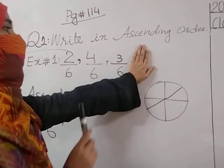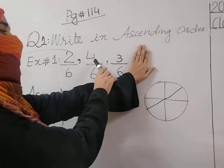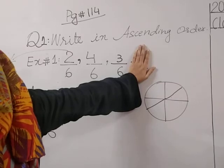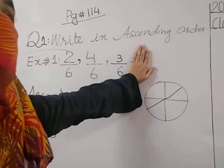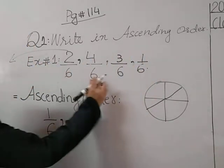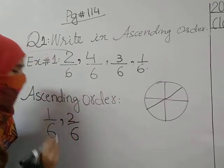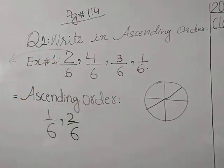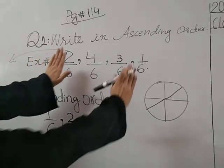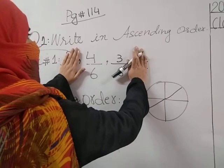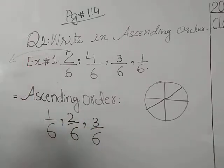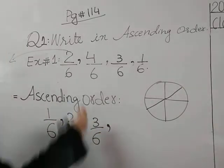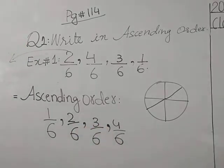Now look at these 3 numbers — numerators are 2, 4, and 3. Which is smaller among these? Fatma, you tell me. Yes, 2 is smaller, so we write 2/6 on second place. Aima, what is the third number? 3 is smaller than 4/6, so we write 3/6 on third place and 4/6 on fourth place.